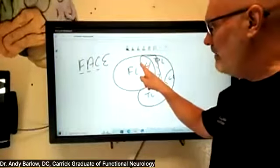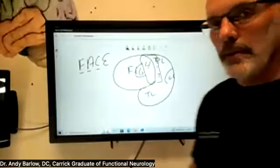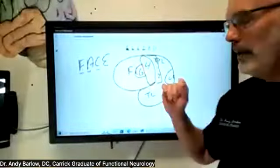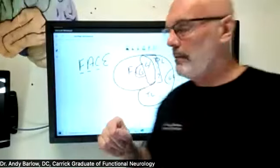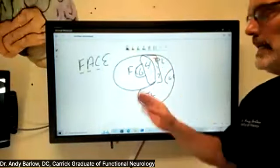In front of area four is area six, our pre-motor cortex. Think of area four as the individual players in an orchestra, and area six as the conductor. If I want to reach and grab something, I can't just move my hand — I have to move my shoulder, elbow, wrist, and fingers together. Area six orchestrates all of that coordinated movement.